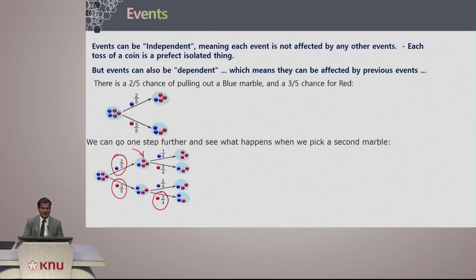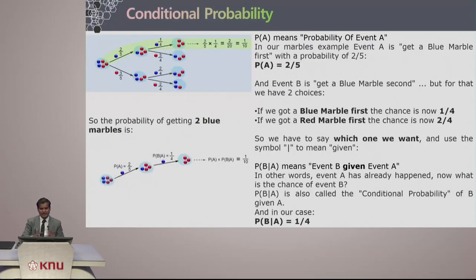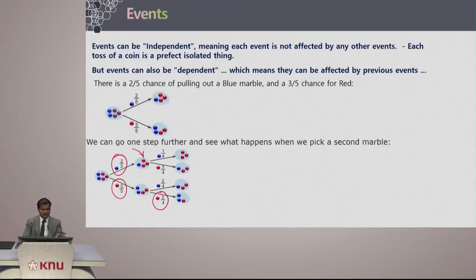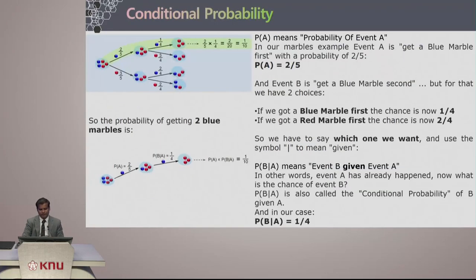With this basis, let us deal more on how conditional probability works. As the word 'condition' implies, it has to satisfy certain conditions. When we say P of A, which means probability of event A, in our marble example, event A is getting a blue marble first, with a probability of 2 by 5.